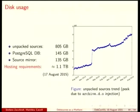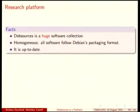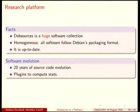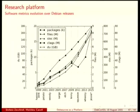We also use Debsources as a research platform, especially about the statistics we gather on all the content. Debsources is a huge software collection — it's homogeneous because all the software respects the Debian packaging format, it is up to date, and we have 20 years of source code evolution with plugins to compute stats. We can have nice charts showing, for example, what are the trending programming languages and how they have changed in the last 20 years. You can see the evolution of the number of packages, the number of files in the archive, the number of lines of code, ctags, and disk usage.